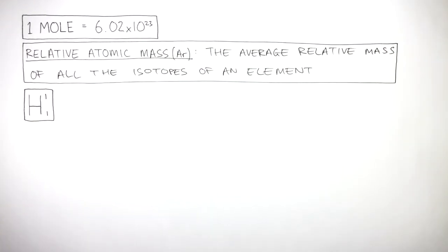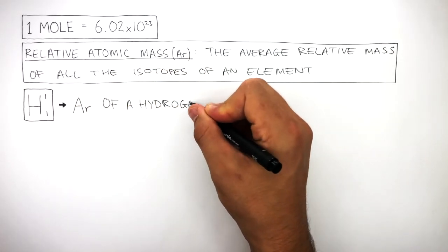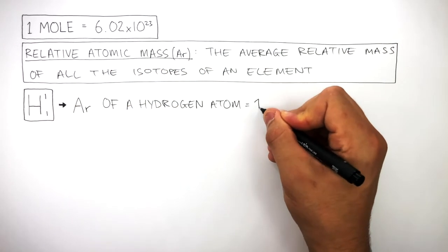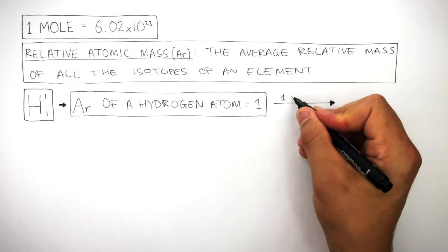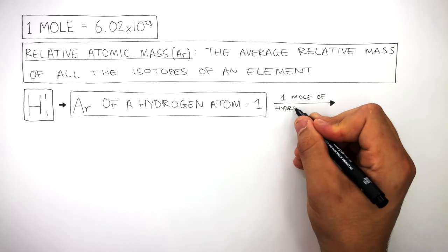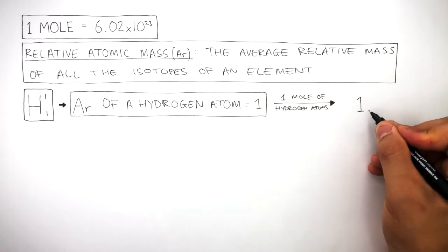This symbol represents a hydrogen atom, and this information tells us that the AR of a hydrogen atom is 1. To convert this AR into mass in grams, we use the mole. One mole of hydrogen atoms equals one gram.